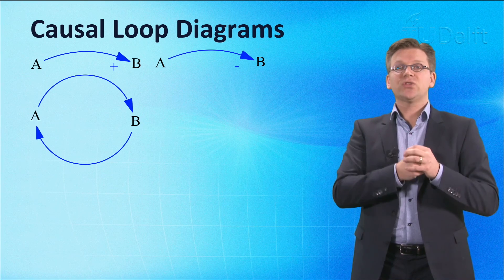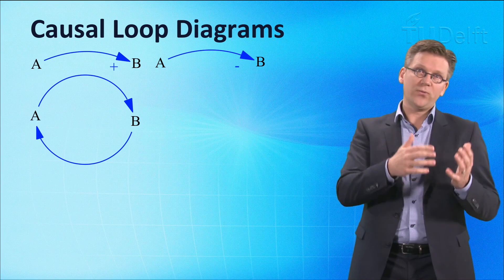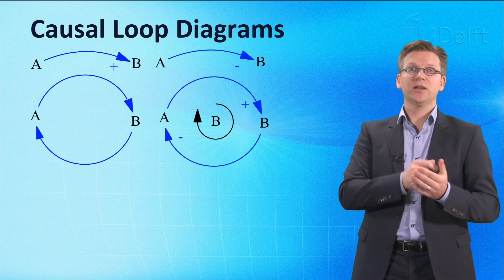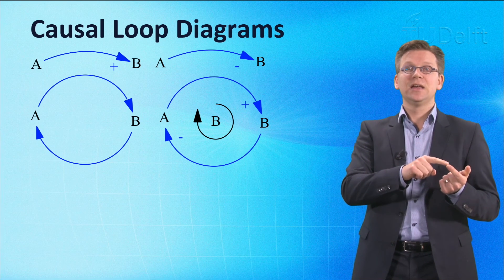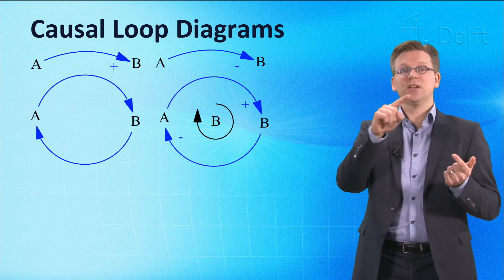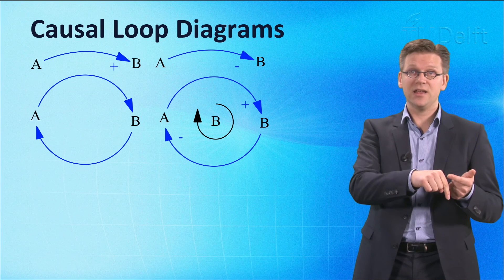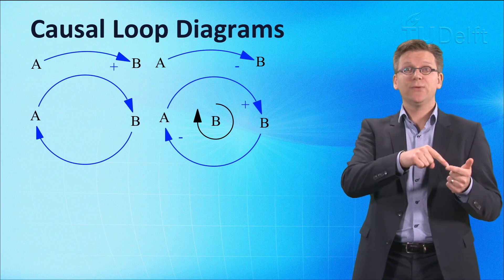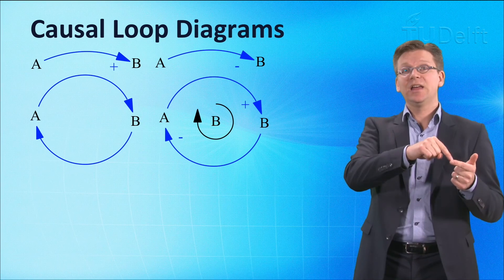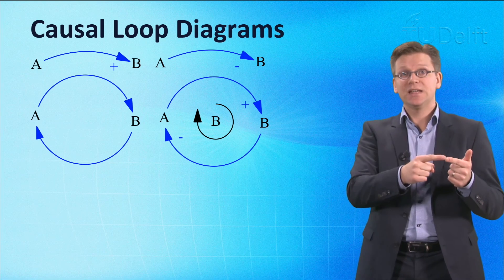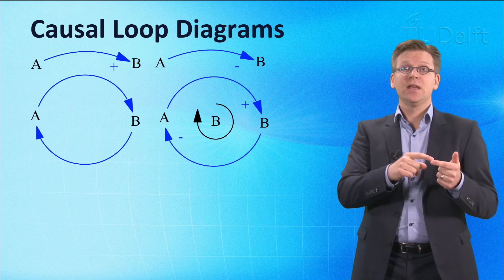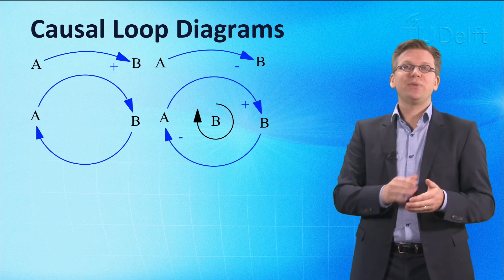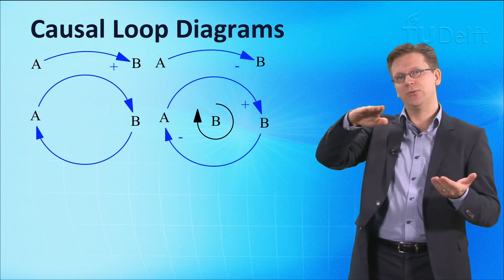There are actually two types of loops. A feedback loop is called a balancing loop if an initial increase in variable A leads after some time to a decrease in A, but also if an initial decrease in A leads to an increase in A. In isolation, such feedback loops generate balancing or goal-seeking behavior.